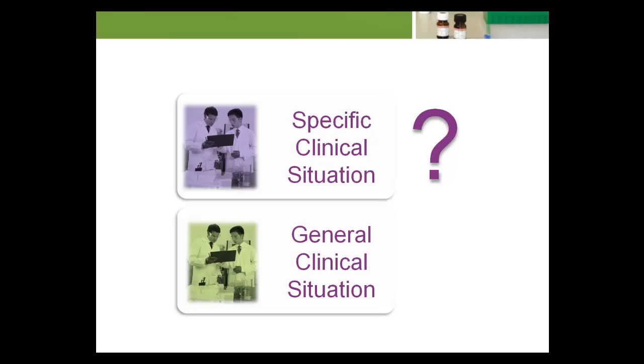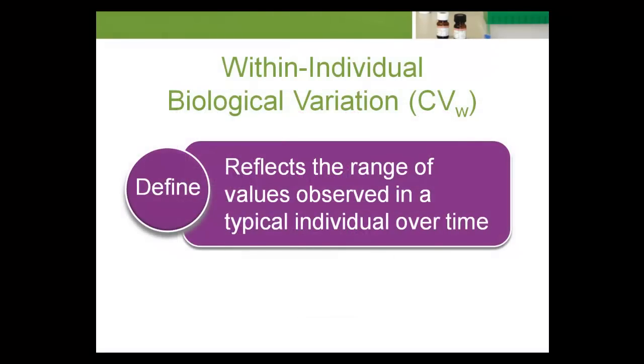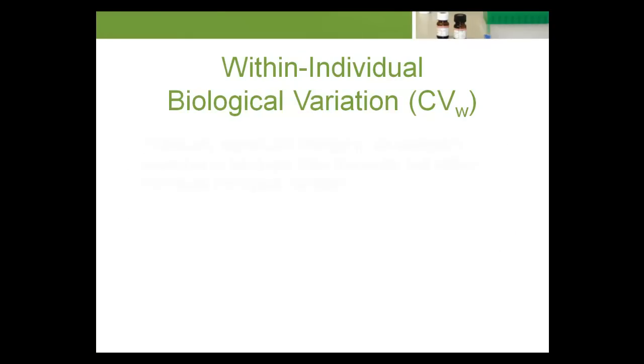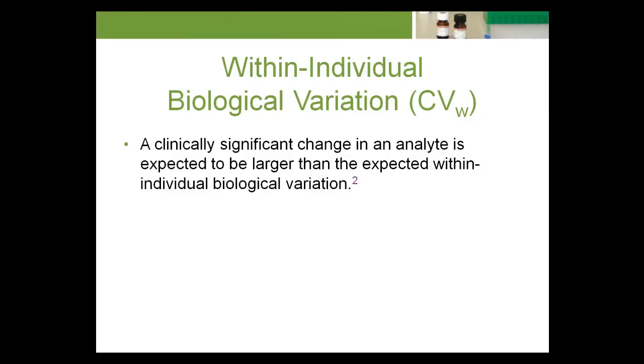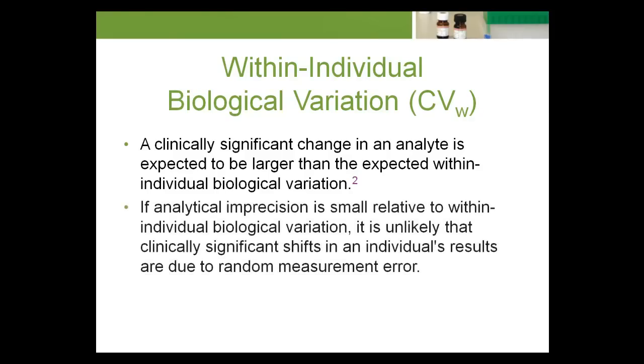One approach is to use knowledge of the within-individual biological variation of the analyte in question to set an upper tolerance limit for allowable analytical imprecision. The within-individual biological variation of an analyte reflects the range of values observed in a typical individual over time. A clinically significant change in an analyte is expected to be larger than the expected within-individual biological variation. If analytical imprecision is small relative to within-individual biological variation, it's unlikely that clinically significant shifts in an individual's results are due to random measurement error.